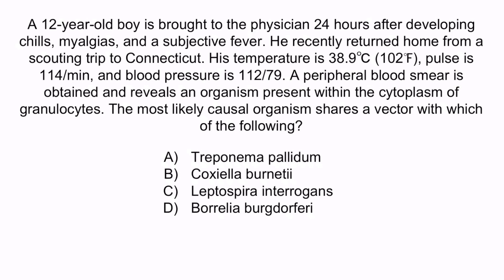A. Treponema pallidum, B. Coxiella burnetii, C. Leptospira interrogans, or D. Borrelia burgdorferi. From the question stem, you should notice that this boy has non-specific symptoms including chills, myalgias, and a subjective fever after returning from a trip to Connecticut. A peripheral blood smear revealed an organism in the cytoplasm of granulocytes. Collectively, these clues should make you think of Anaplasma.